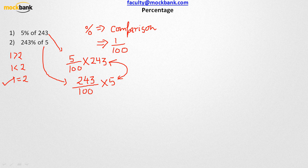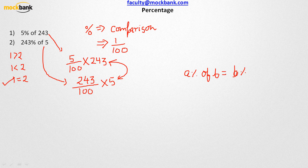So the answer is that quantity 1 equals quantity 2. At the very beginning it might seem that the second quantity is more, but actually A percent of B equals B percent of A. So 5% of 243 is very much equal to 243% of 5. That is the key principle to be understood.